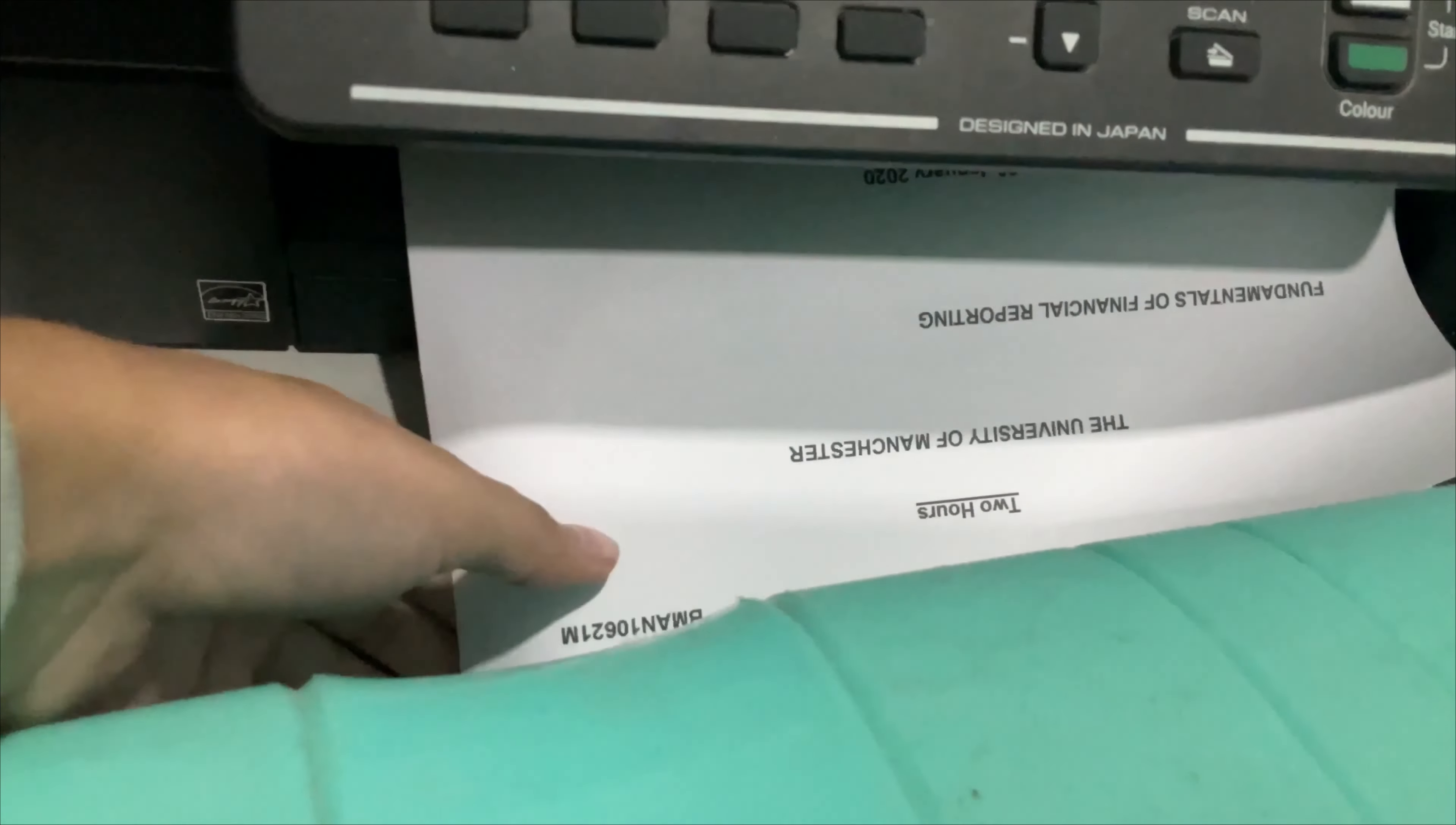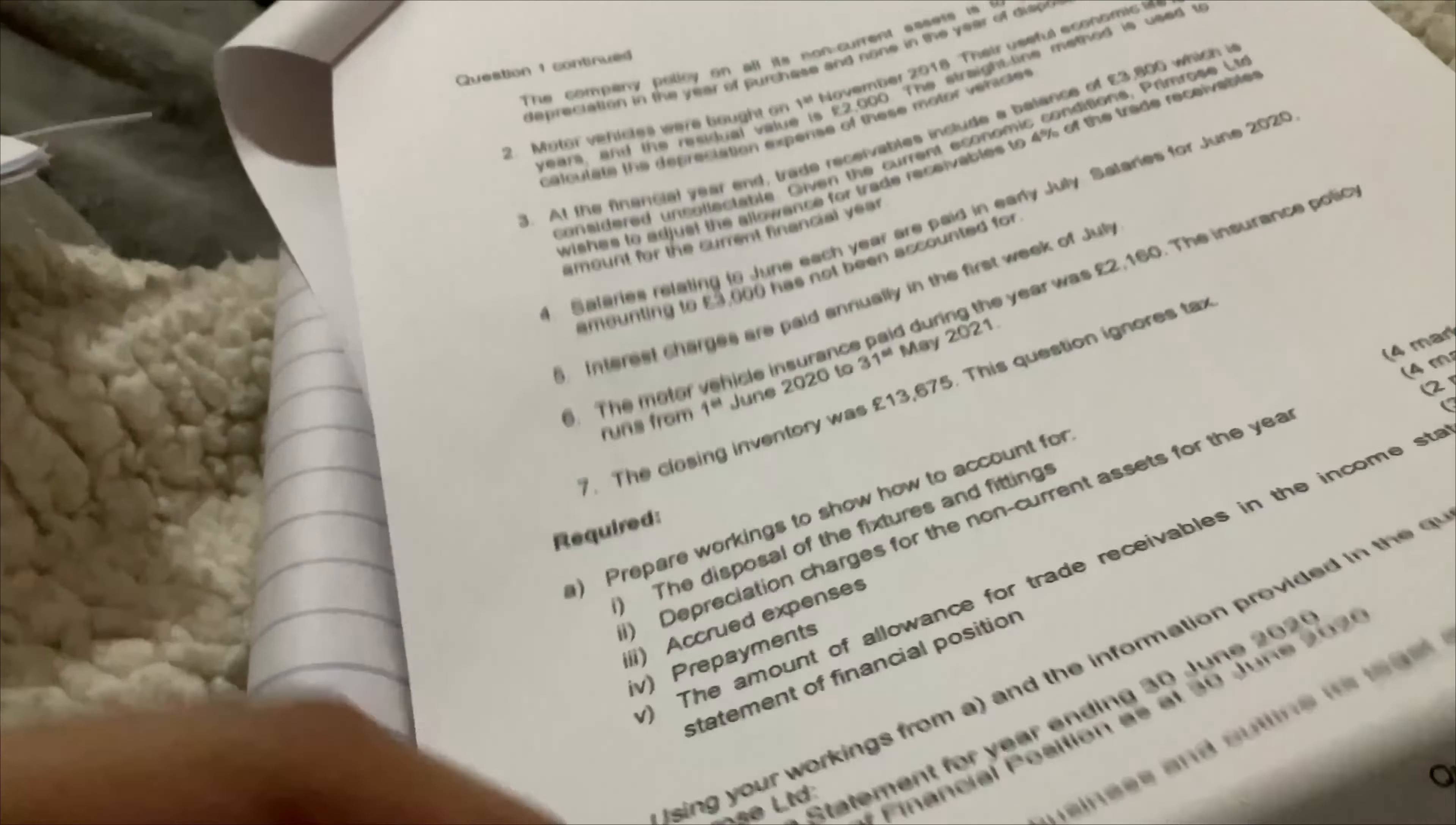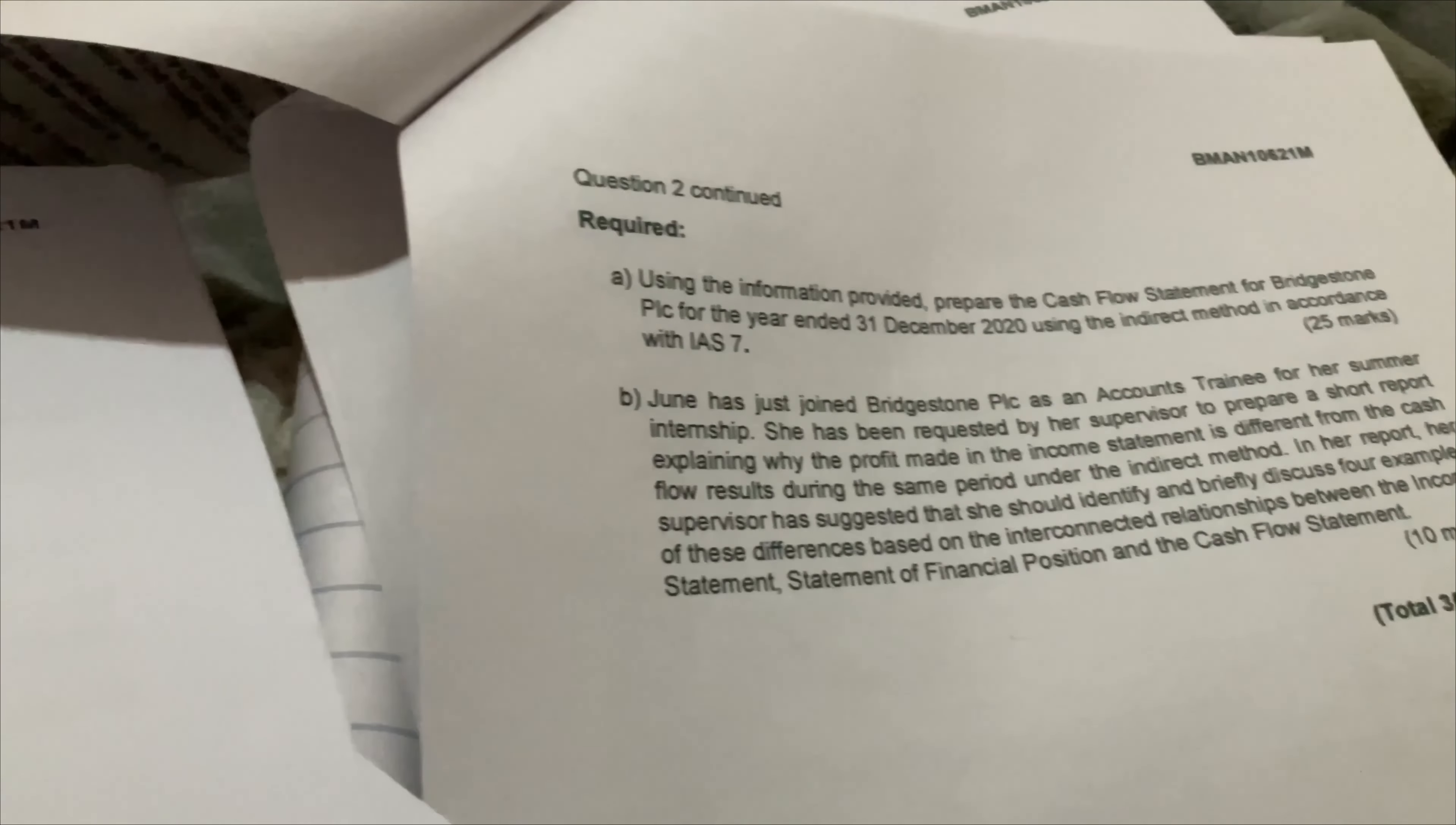I'm printing the papers for financial reporting—past papers. There's going to be theory as well, so in these papers I'm underlining what the theory questions are about. For example, this one is about cash flow statement, so I'll write that here. Then I can analyze what kind of theory questions are coming each year.